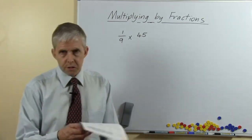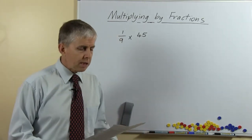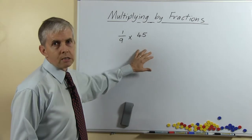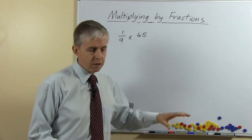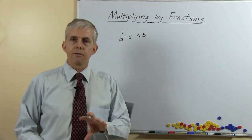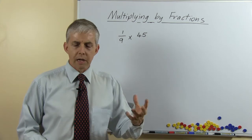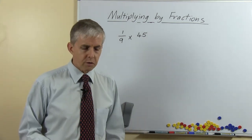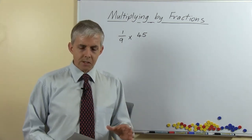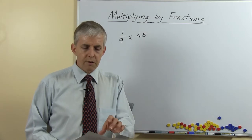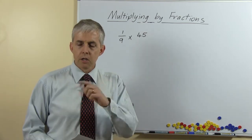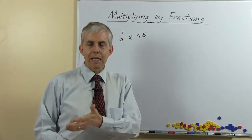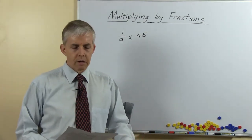On the very first of the worksheets it starts off with a set of questions, beginning with one ninth times 45. They're multiplying unit fractions by whole numbers, which will relate to times tables and number facts the students have already done. On the right-hand side at the top we have a similar set, only reversed — the turnaround questions — so 28 multiplied by one seventh, and so on.